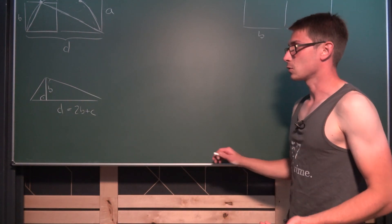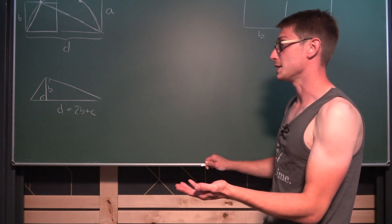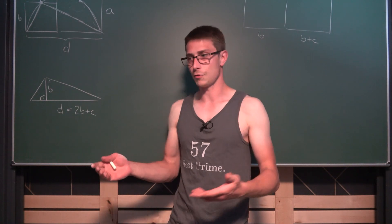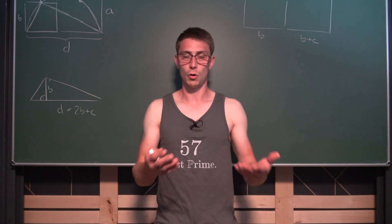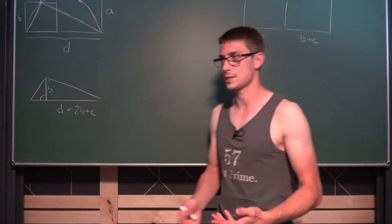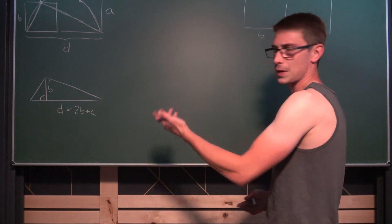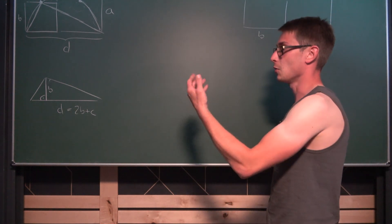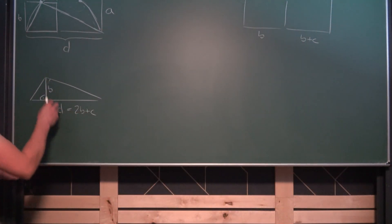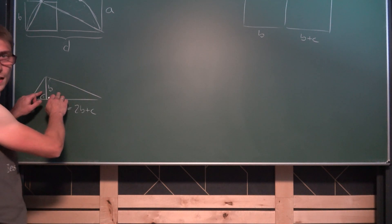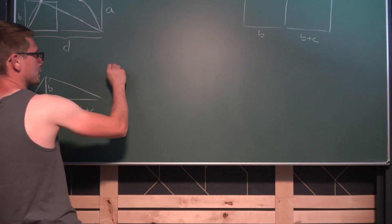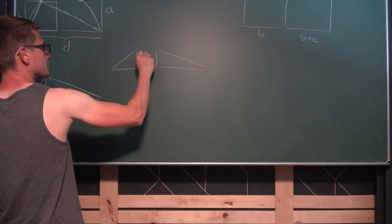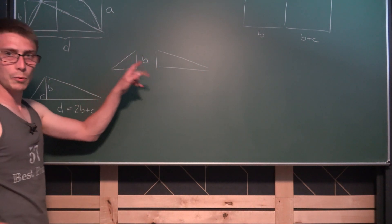And now the last thing we are going to do, and then we are basically already done, is we are going to take a look at similar triangles. This is in fact an application of Euclid's Höhensatz. So this is the height theorem by Euclid. I don't know if it's called that in English too. But hear me out. It's very easy to see that if we put a height in here, we are going to divide this up into two similar triangles. We get this one right here and this one right here.